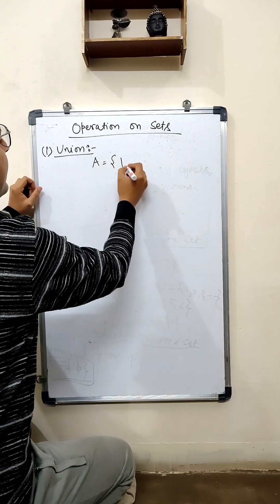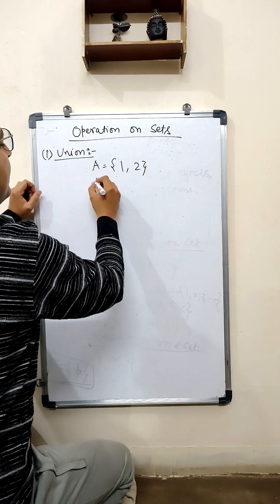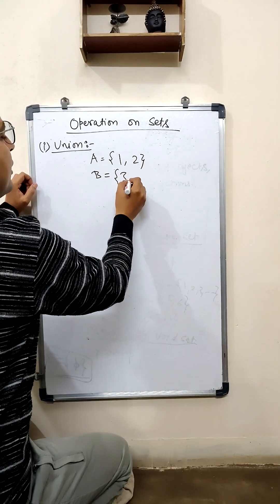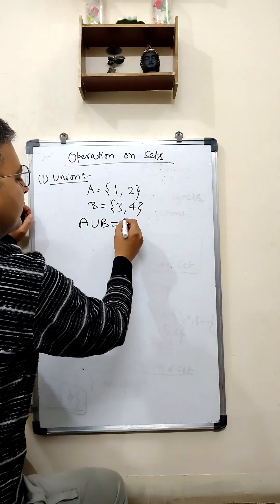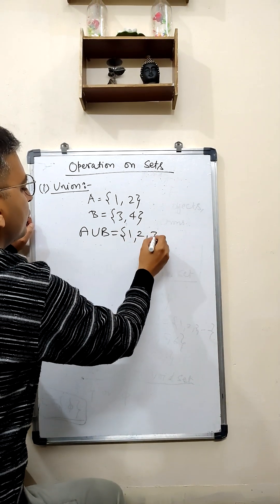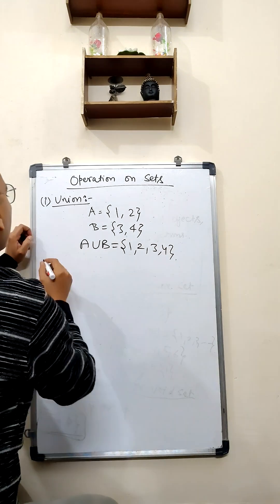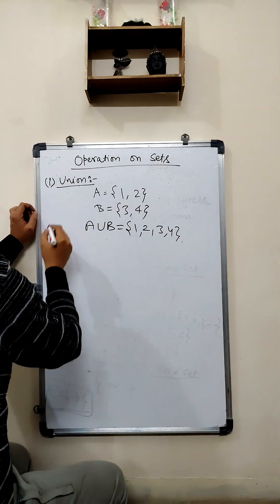For example, set A has elements 1, 2 and B has elements 3, 4. So A union B is equal to 1, 2, 3, 4.